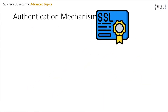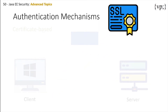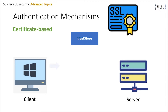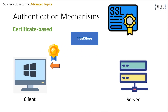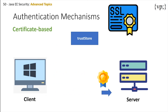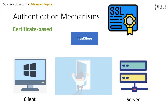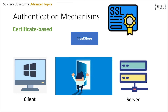Here is what certificate-based authentication looks like. First, the client requests access to a protected resource. The web server then presents its certificate to the client. The client then verifies the certificate from the trust store. If successful, the client then sends its certificate to the server. The server then verifies it using the trust store. And if all of that is successful, the server grants access to the protected resource requested by the client.